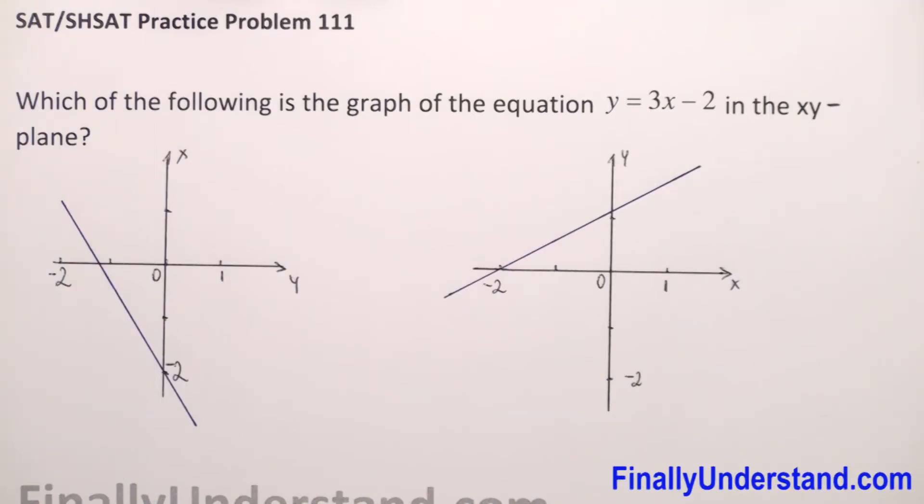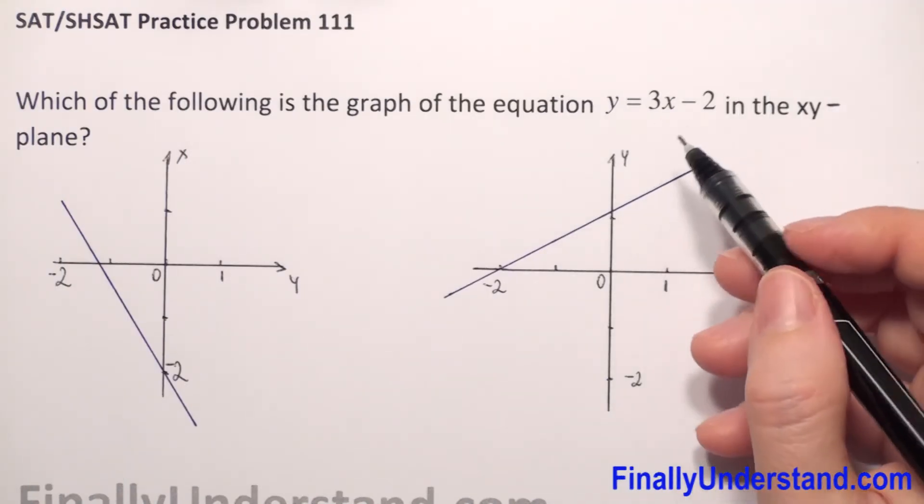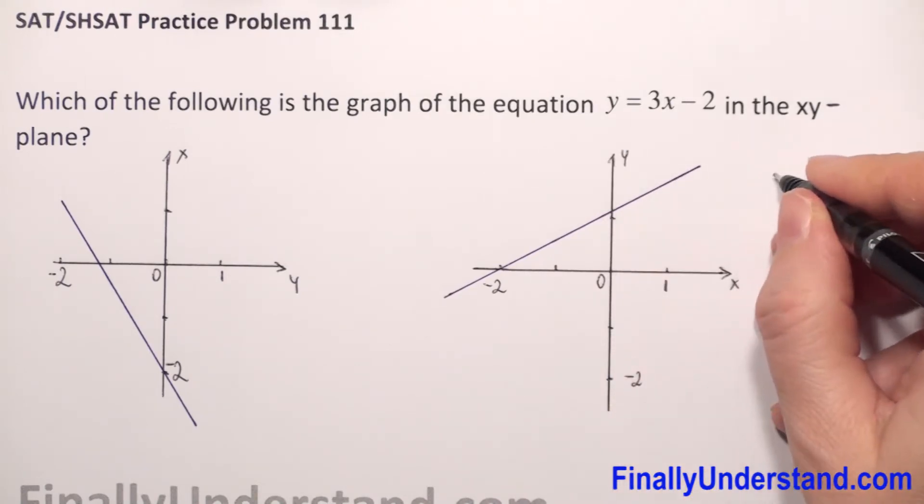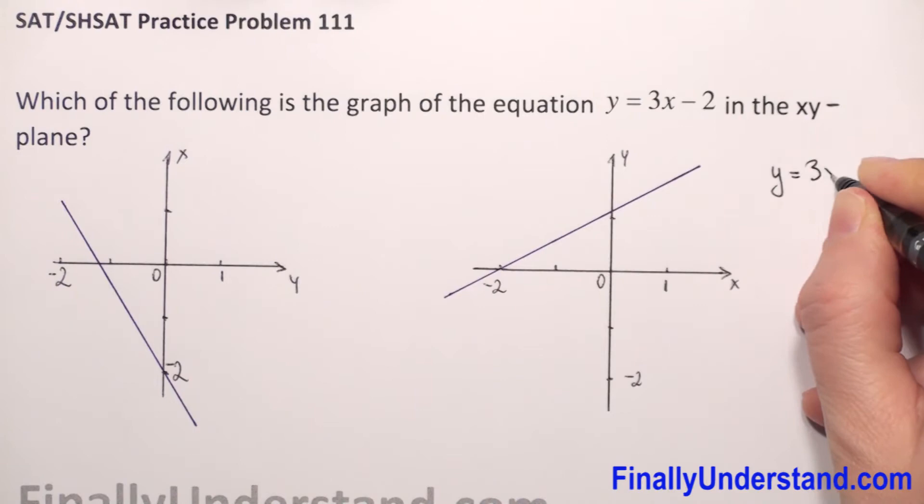Which of the following is the graph of the equation y equals 3x minus 2 in the xy plane? So let's see what kind of function we have here. We have y equals 3x minus 2. This is a linear function.